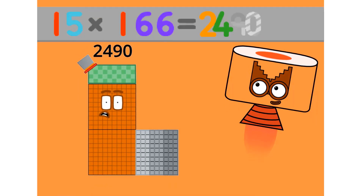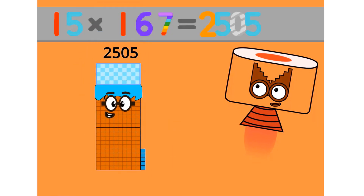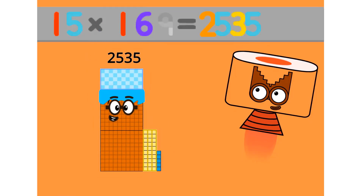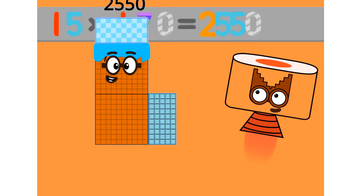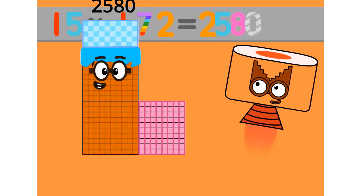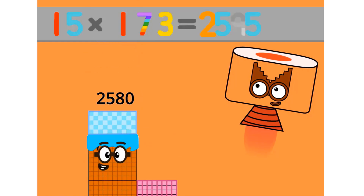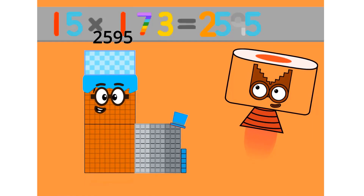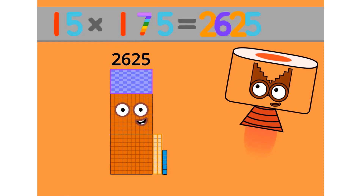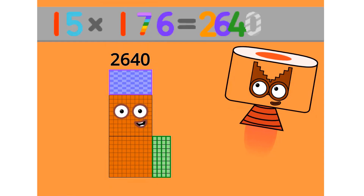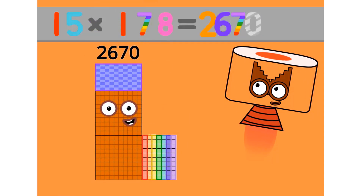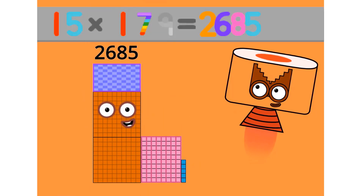15 x 131 equals 1965. 15 x 132 equals 1980. 15 x 133 equals 1995. 15 x 134 equals 2010. 15 x 135 equals 2025. 15 x 136 equals 2040. 15 x 137 equals 2055. 15 x 138 equals 2070. 15 x 139 equals 2085. 15 x 140 equals 2100.